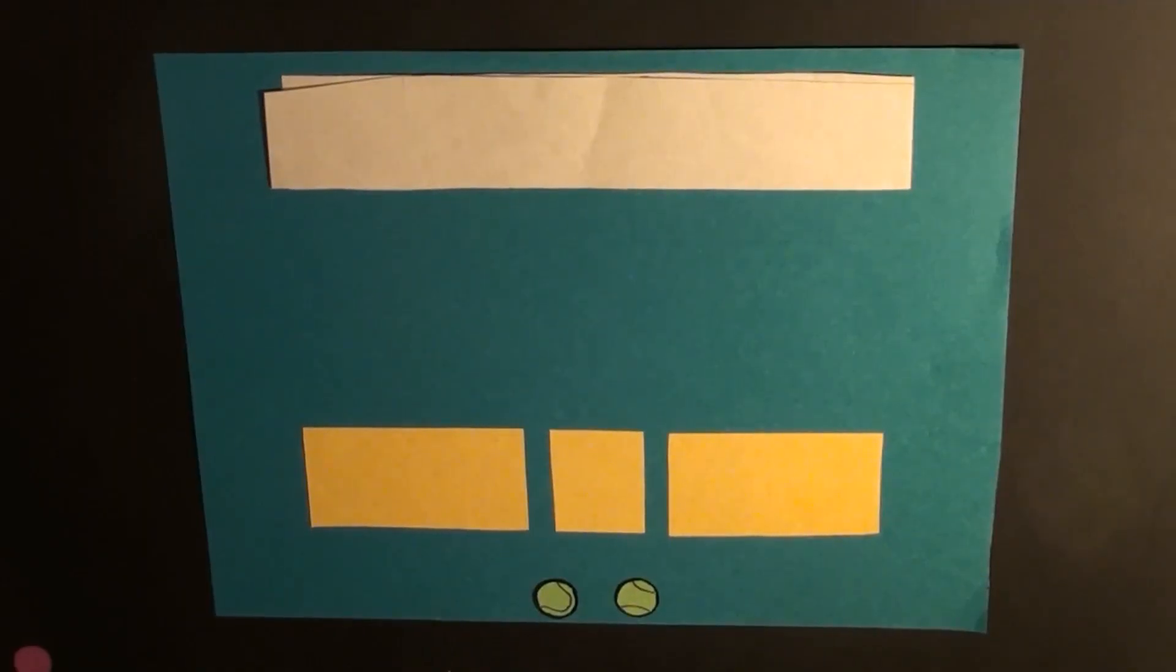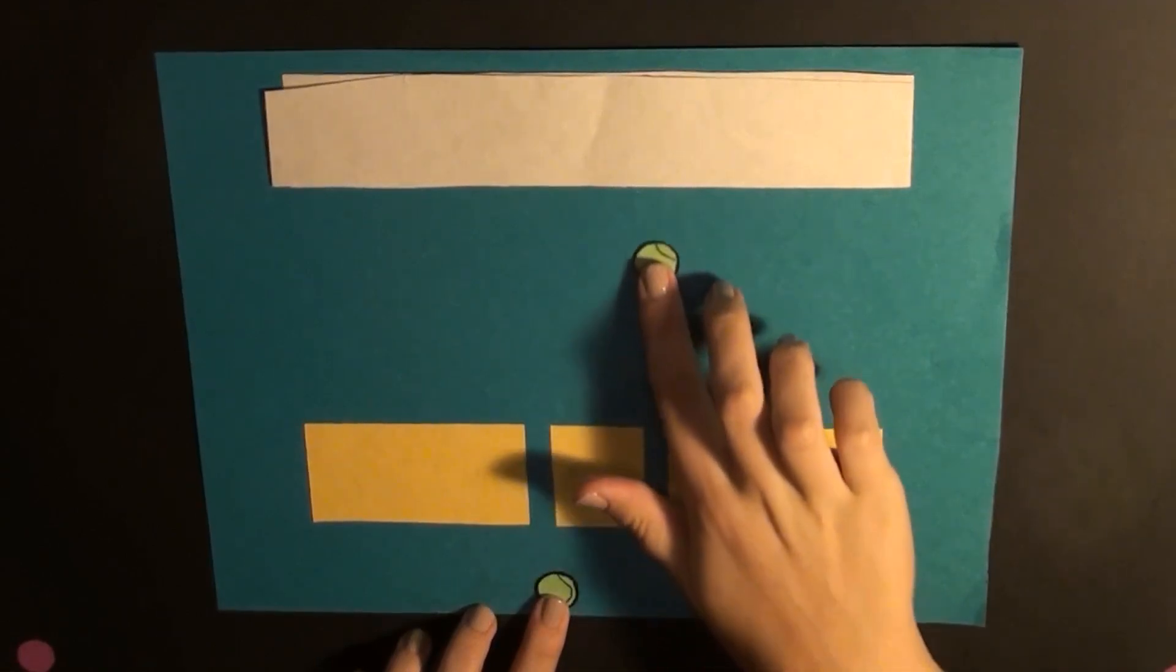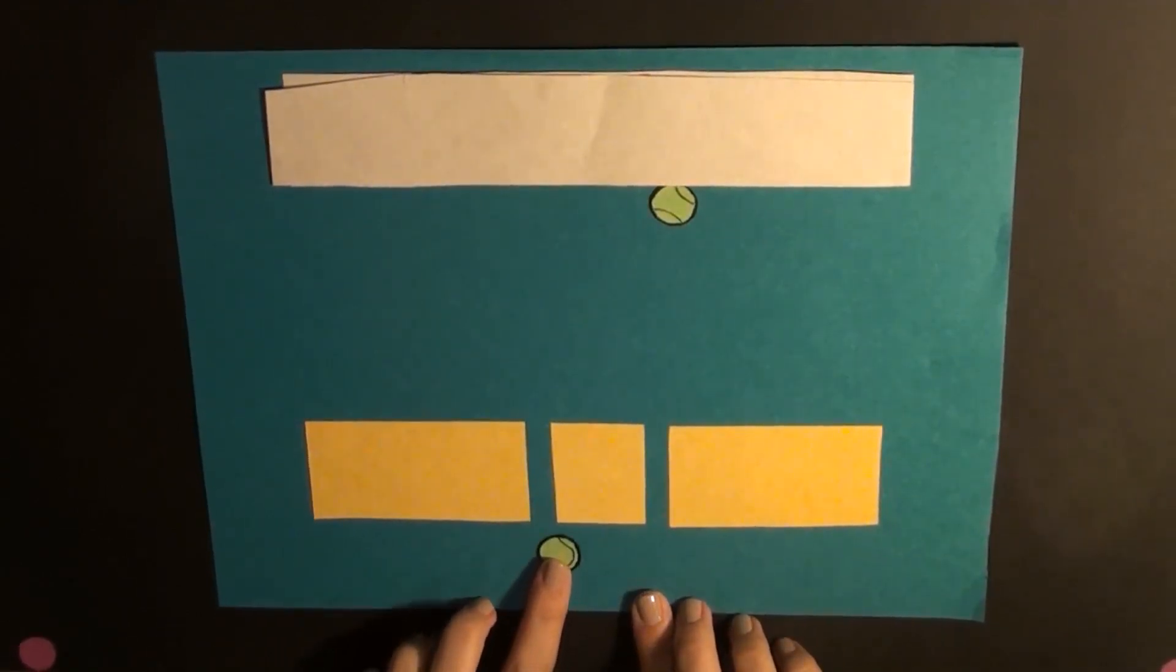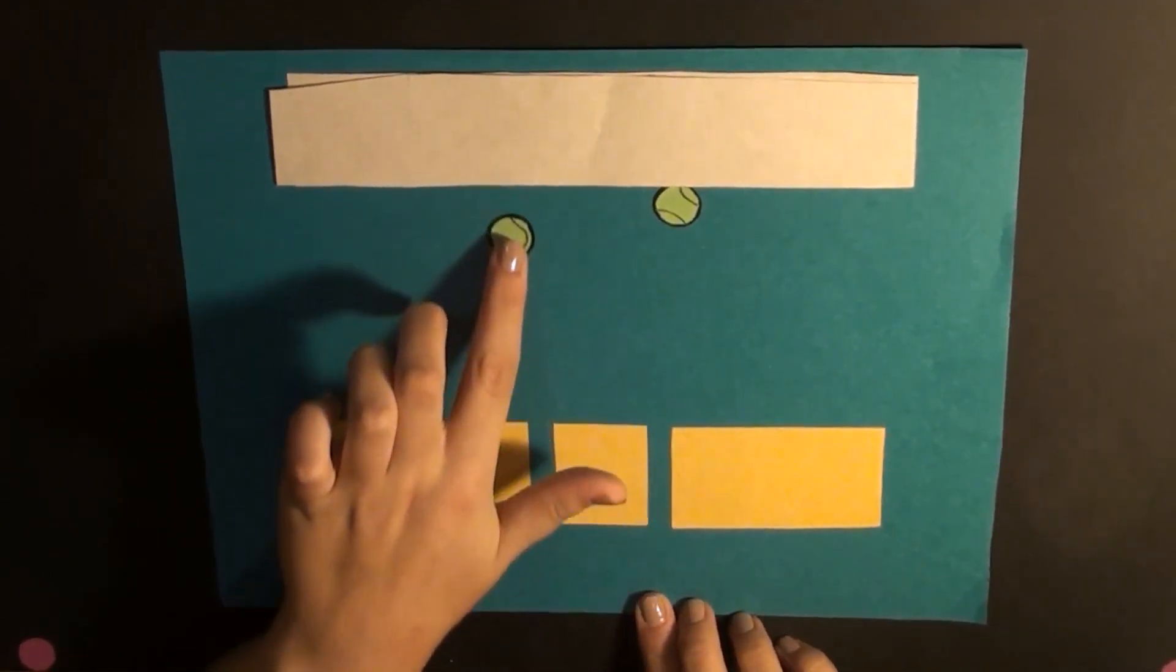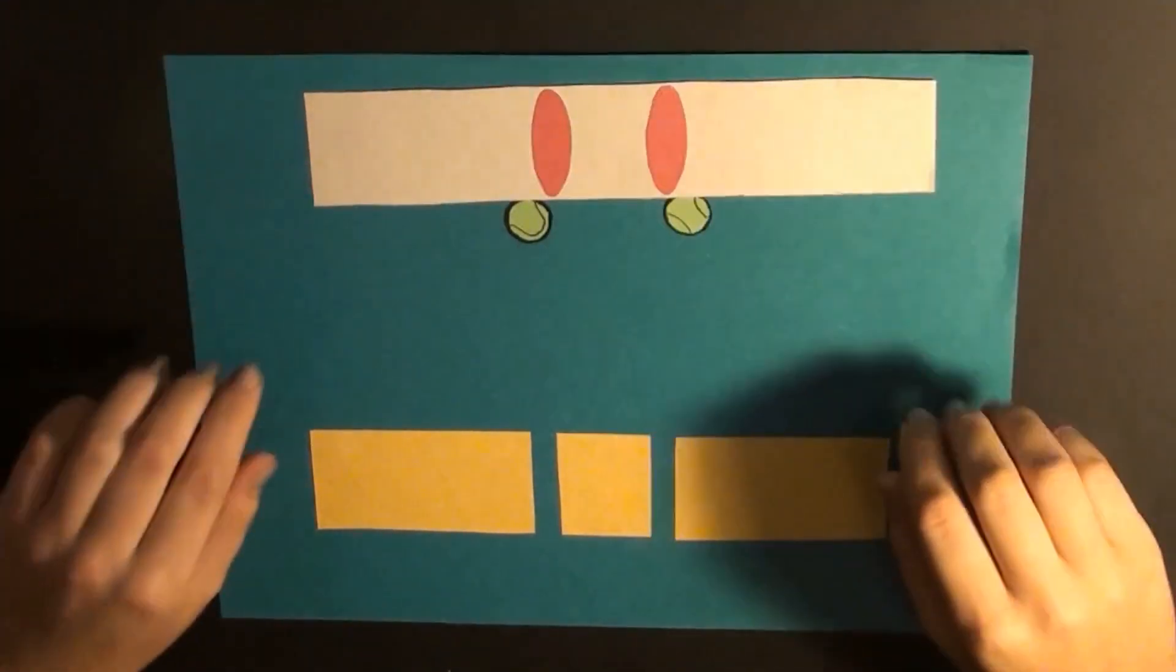This all changed with the double-slit experiment. Let's start with a large-scale explanation of the experiment. If you were to shoot tennis balls one by one at a barrier that has two slits and you record with a detector where the balls that manage to pass through the slits impact a second barrier, they would create a pattern much like the one shown here.